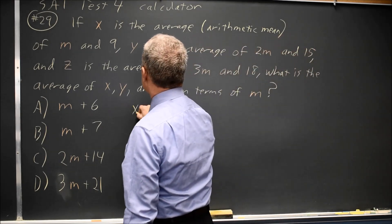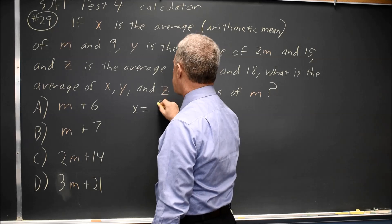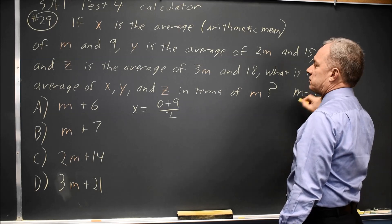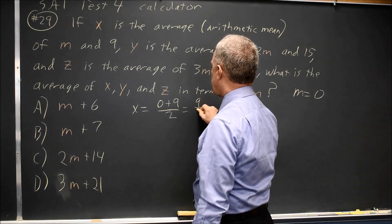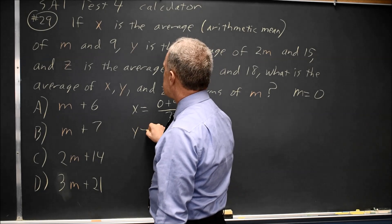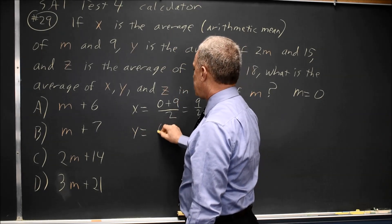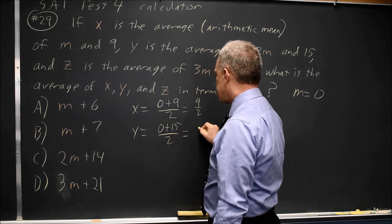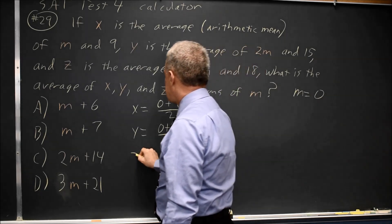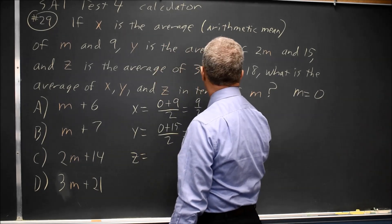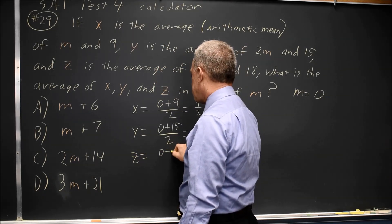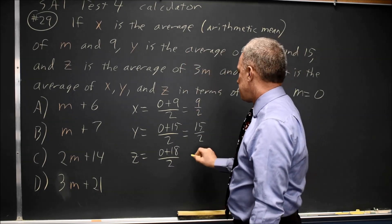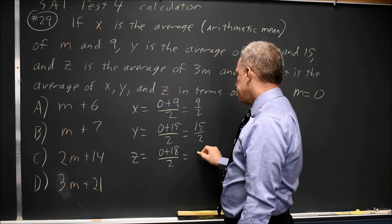X is the average of M and 9, so that would be 0 plus 9 over 2, since I'm choosing M equals 0. So X is 9 halves. Y is the average of 2M and 15, so 0 plus 15 over 2. That's 15 halves. And Z is the average of 3M and 18, so 0 plus 18 over 2. That's 18 over 2, which is 9.